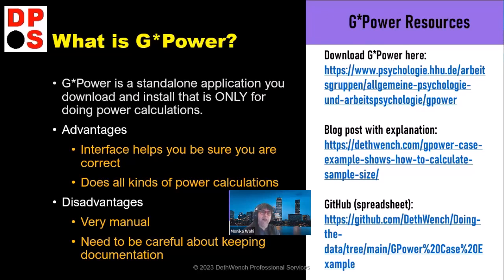The disadvantage that people who are really good at math and programming would cite is that it's really manual — you have to click, click, click, calculate, click, click, calculate. You've got to be organized about the results of that calculation because each time you do a new one it erases and you get a new one. So maybe you've got to do data collection on your answers. That's part of what I'm going to demonstrate — how do you do this manual operation and then keep track of what happened so you can communicate with the rest of your team.